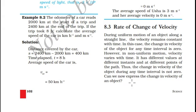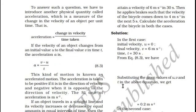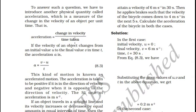How can we express this change in velocity of an object when the velocity changes with time? There is a physical quantity known as acceleration, which is the measure of change in velocity of an object per unit time. Acceleration is equal to change in velocity divided by total time taken. If the velocity of an object changes from initial velocity u to final velocity v in a given time interval t, then acceleration equals final velocity minus initial velocity divided by time interval.